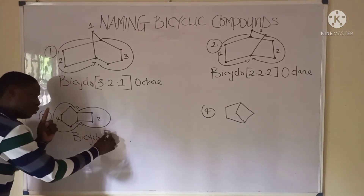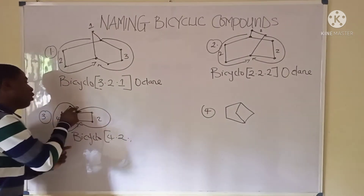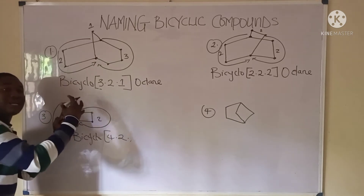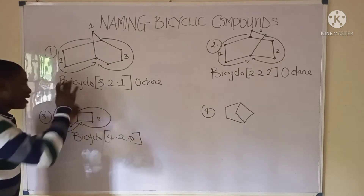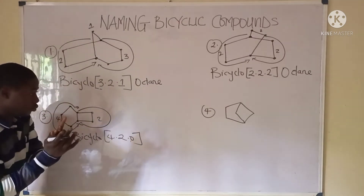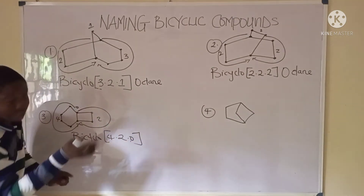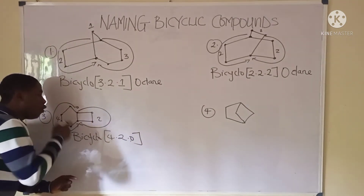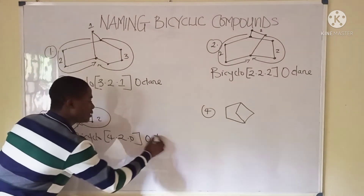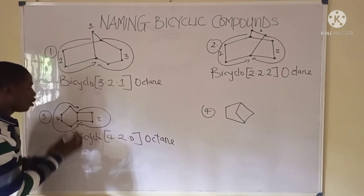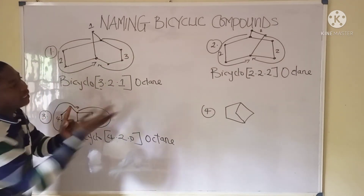In descending order: four, two, zero. So the name uses bicyclo(4.2.0). Counting all carbons: four plus two plus zero equals six, plus the two bridgehead carbons equals eight, so it is called bicyclo[4.2.0]octane.